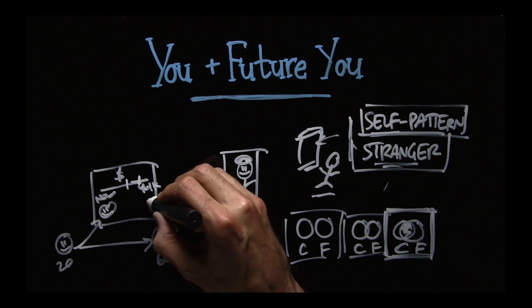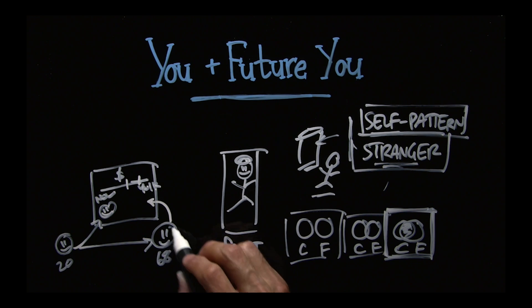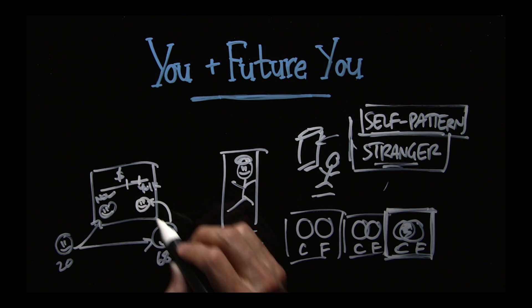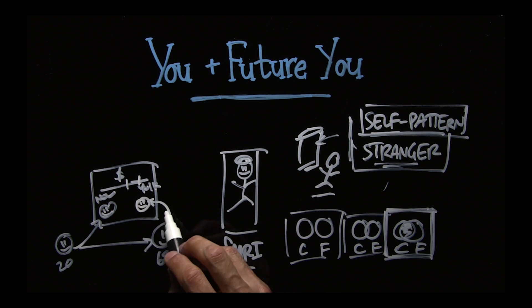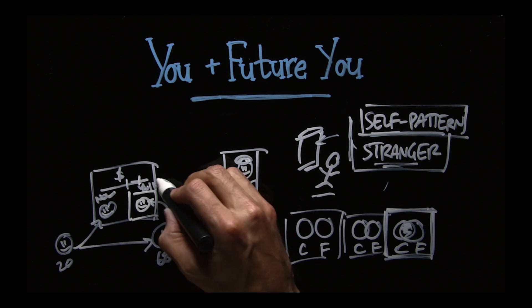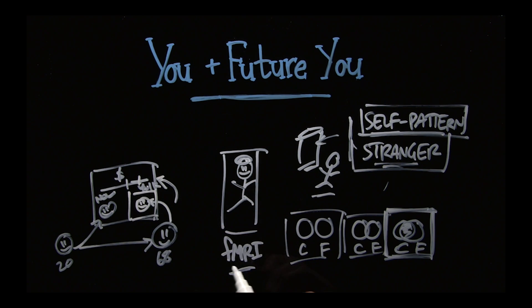The other group, they put in this picture of what they're going to look like at 68 years old below the retirement amount. And by making this connection between the current self and the future self in this condition, they put a ton more into their 401k. That's awesome.